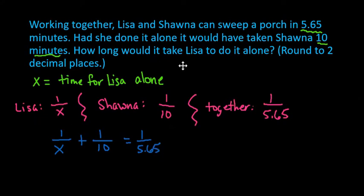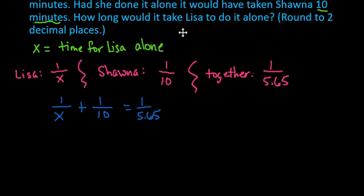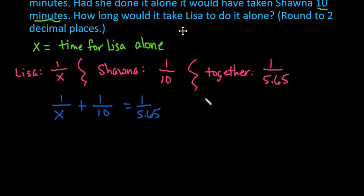So the first thing that we would do is try to get rid of fractions since it is a rational equation. So our LCD is going to be 10 times 5.65 times X or we could say 56.5X.